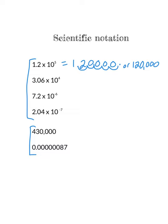3.06 times 10 to the 4 — again it's positive so I'm moving the decimal place to the right, making the number bigger. Counting 1, 2, 3, 4 — add two zeros — and this is 30,600.